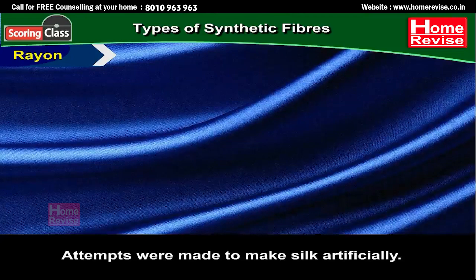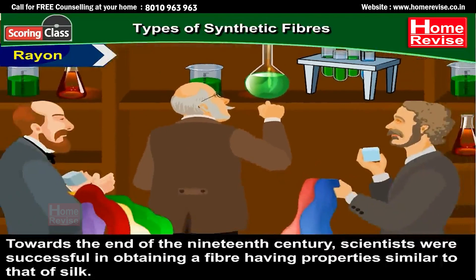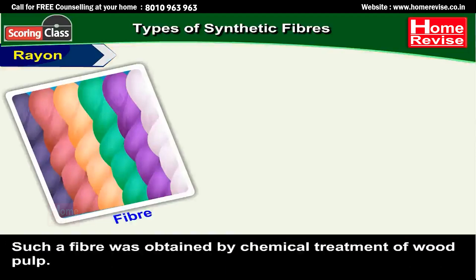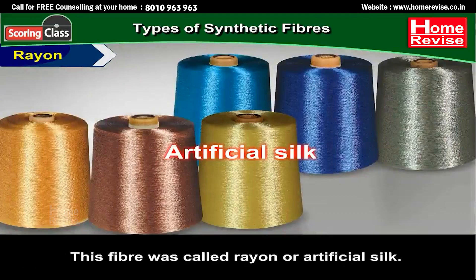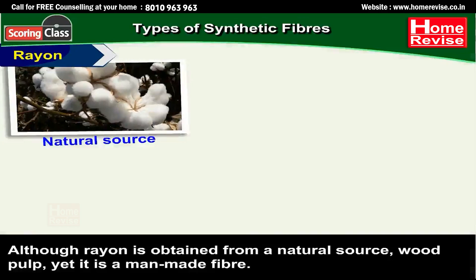Attempts were made to make silk artificially. And finally, towards the end of the 19th century, scientists were successful in obtaining a fibre having properties quite similar to that of silk. Such a fibre was obtained by chemical treatment of wood pulp. This fibre was called rayon or artificial silk. Although rayon is obtained from a natural source, i.e. wood pulp, yet it is a man-made fibre.